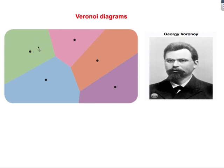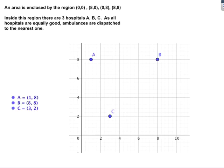The idea is that Voronoi diagrams can easily show you where your closest point of interest is — whether that's hospitals, food stalls, or whatever. This was invented by Mr. Voronoi, a Russian mathematician.